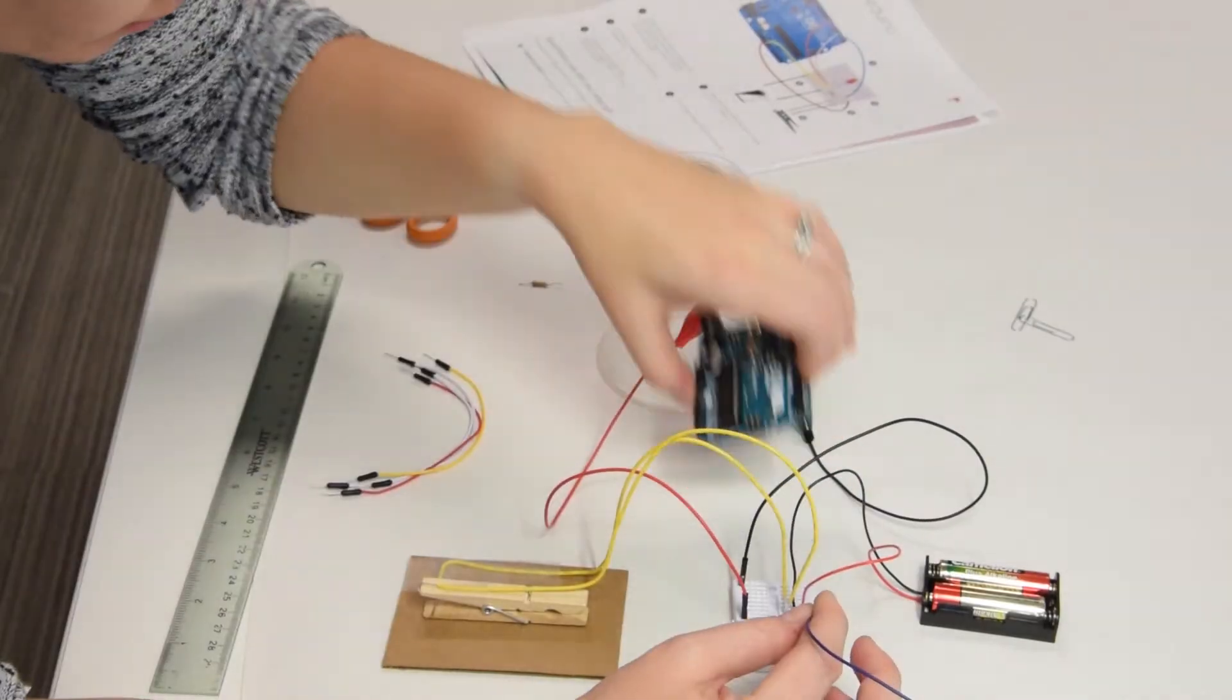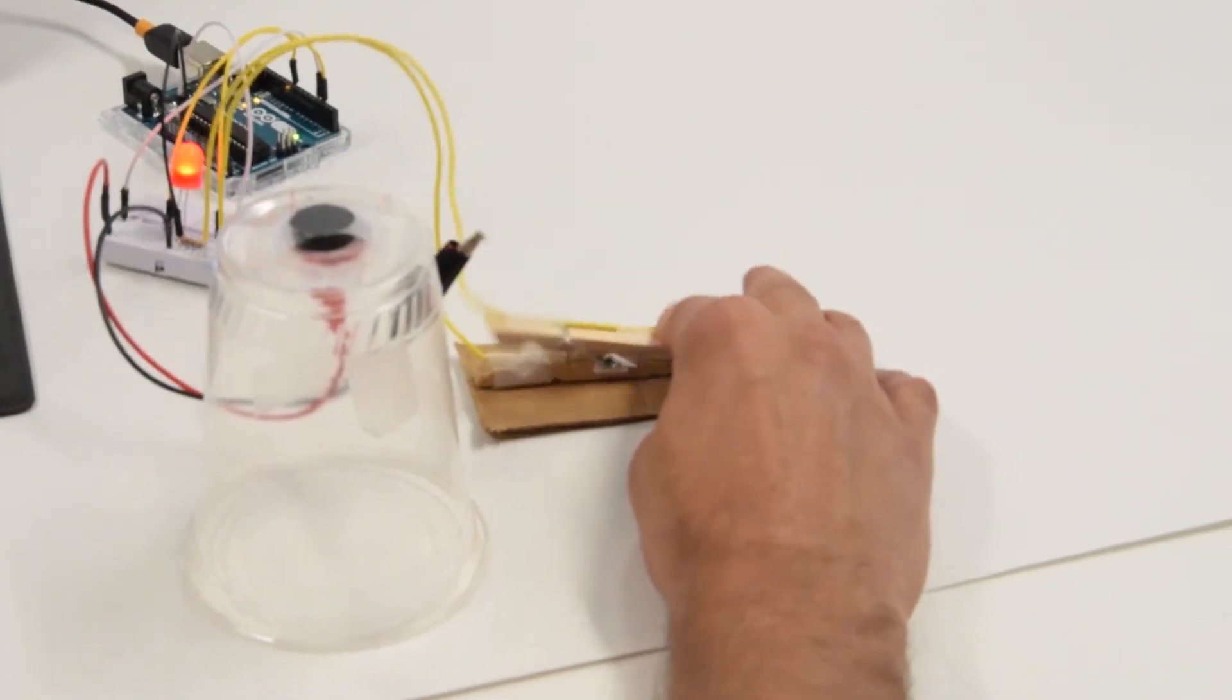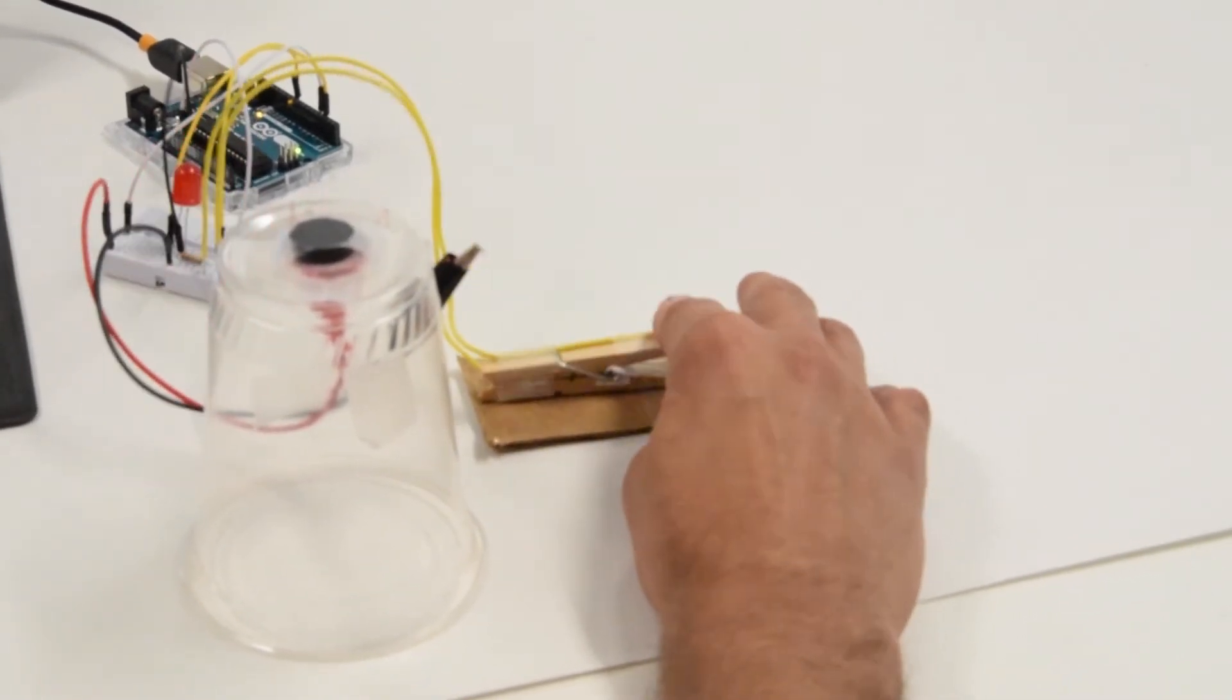And then finally, students add an Arduino Uno to their telegraph, which then enables them to send messages in Morse code.